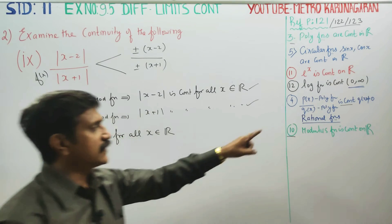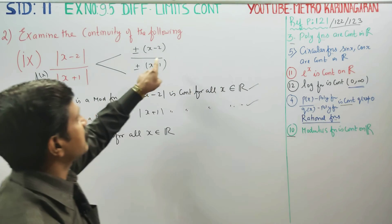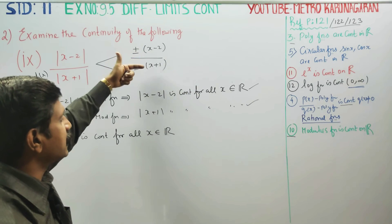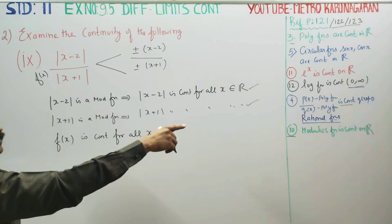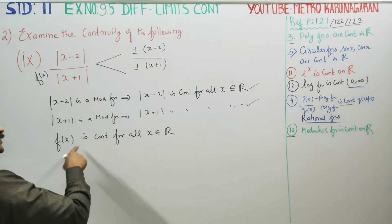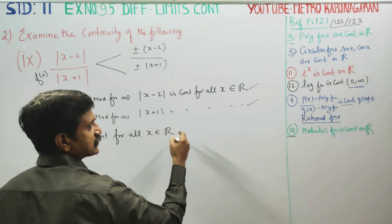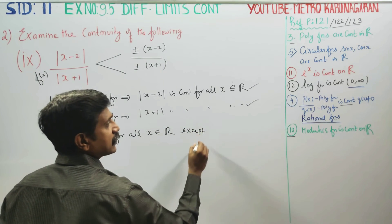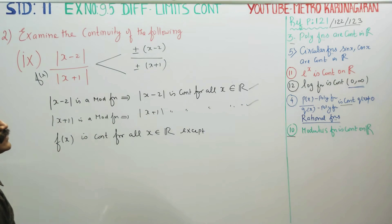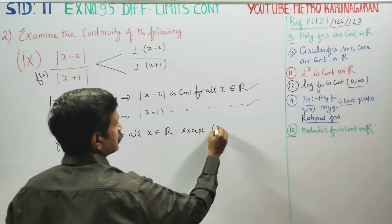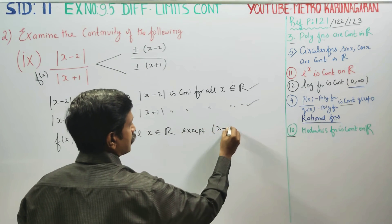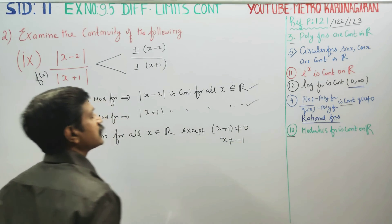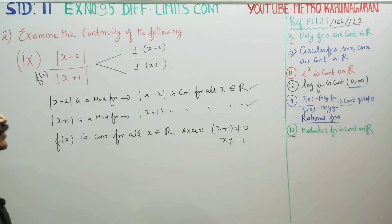So, if you have rational functions, it is continuous for all values except where q(x) is not equal to 0. Here, x + 1 is not equal to 0, which means x is not equal to -1. This is the first problem, and the condition x + 1 ≠ 0 must be satisfied for the function to be continuous.